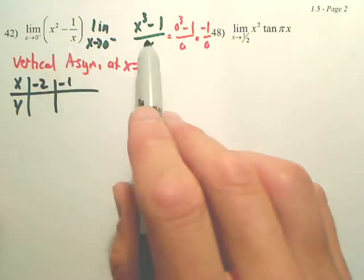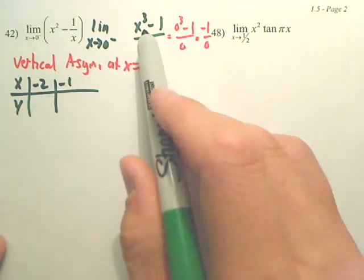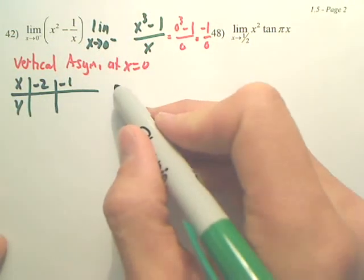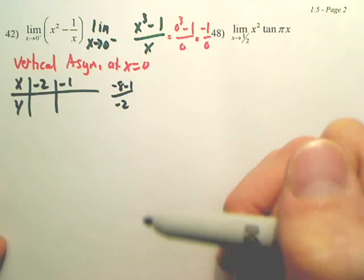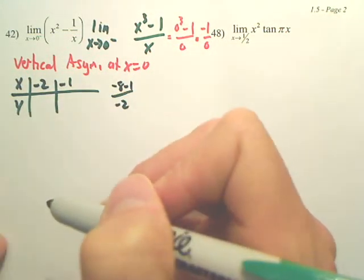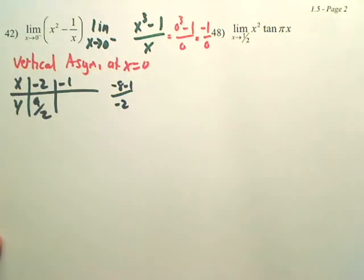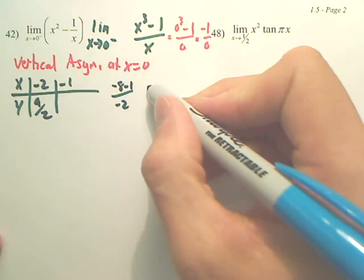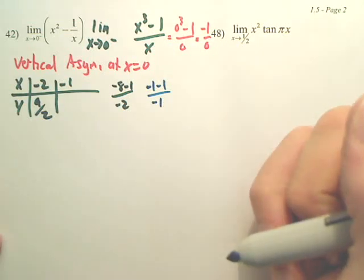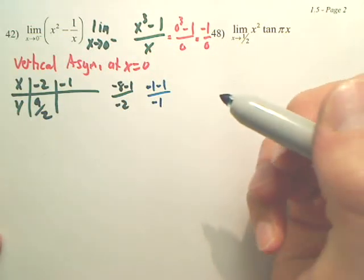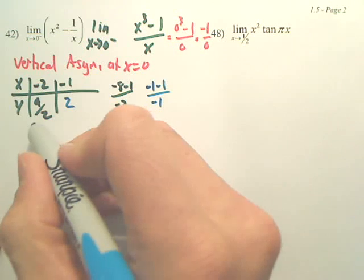Now again, it doesn't matter which equation you used. I'm just using this one because, I don't know, I like it better for some reason. When I plug in negative two, negative two cubed is going to be negative eight minus one over negative two, which gives us positive nine over two. And then if we plug in negative one, we get negative one minus one over negative one, which becomes positive two. Is that right? Positive two. Now this one right here, isn't that 4.5?